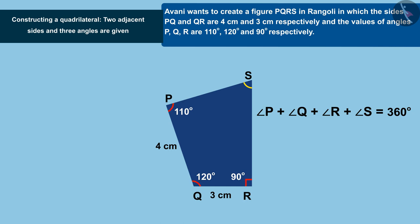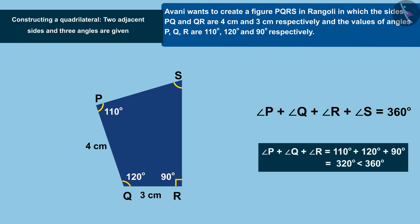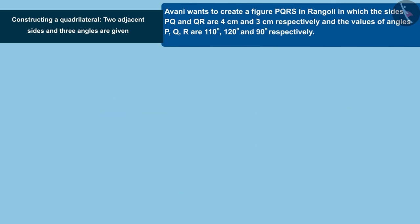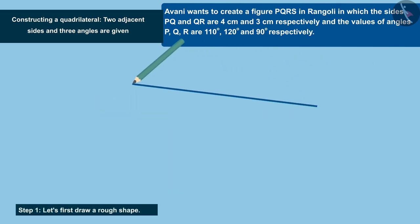The sum of the three angles given is less than 360 degrees, with the help of which we can find the value of the fourth angle of the quadrilateral. This makes it possible to construct a quadrilateral. So, let's first draw a rough shape.